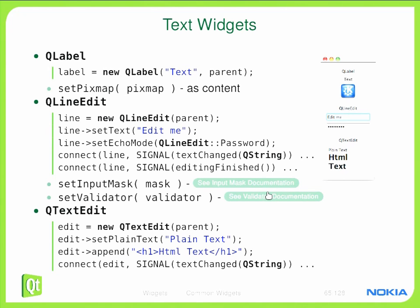So we choose QLineEdit::Password as an enum. Once the line edit is created, we can create connections between signals and slots. QLineEdit offers the textChanged signal, which emits whenever the text changes, and the editingFinished signal, emitted whenever the user presses the Enter key. There's also setInputMask and setValidator methods, both used to validate user entry — one through an input mask with a fixed number of digits, and the other through a QValidator object.